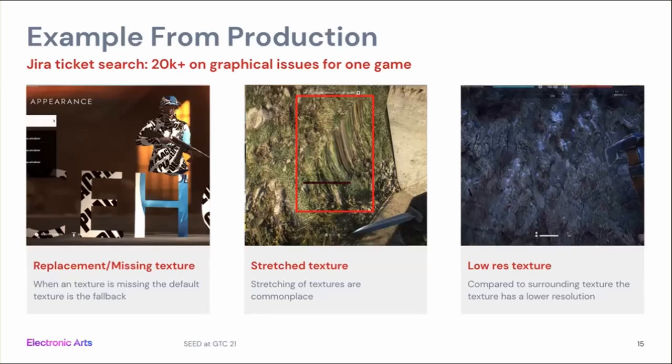To show how common this is: a Jira ticket search for one of our games leads to more than 20,000 graphical issues found by human playtesters. The majority are either replacement or missing textures — the texture has gone missing, maybe it didn't load from the database or maybe it never existed. There are also stretched textures and low resolution textures, where something is wrong with the texture on the object — it's stretched or low resolution.